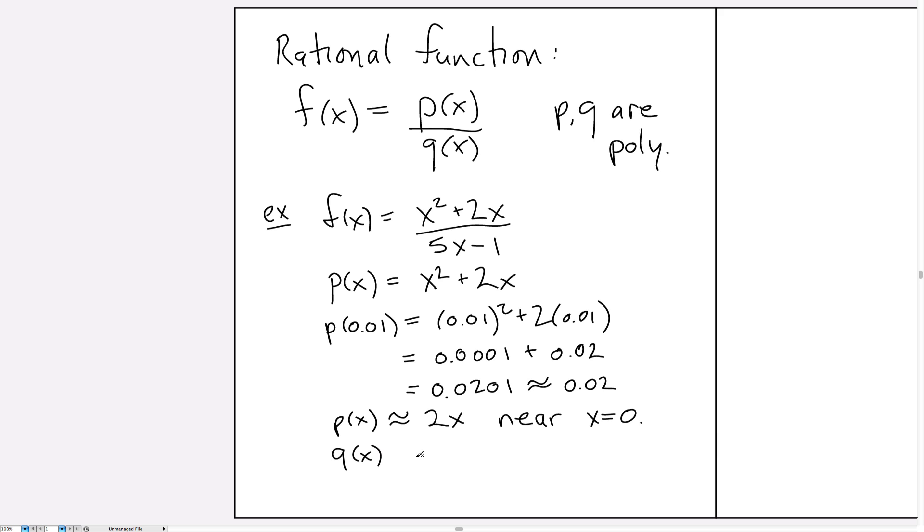We can do a similar thing for q(x). q(x) is 5x minus 1. If we plug in a small number and multiply that by 5, it'll still be a small number compared to 1, as long as we choose x close enough to 0. So we can approximate this function by ignoring all but the lowest degree part of the polynomial, which means keeping only the minus 1.